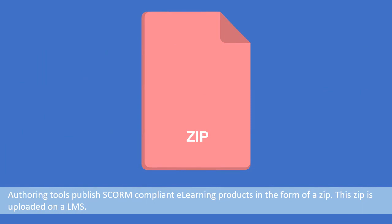So, how can you make your e-learning products SCORM compliant? For developing e-learning products, you use authoring tools such as Captivate, Storyline, Lectora, etc. While publishing the e-learning deliverable using these tools, you can choose SCORM as the desired compliance. The published files are in the form of a zip file, which is then uploaded on the SCORM compliant LMS.